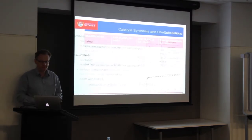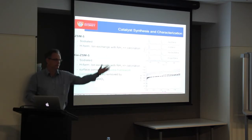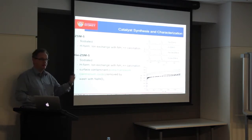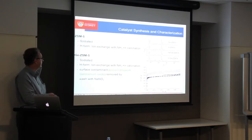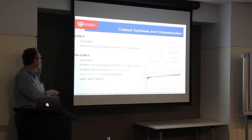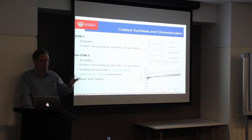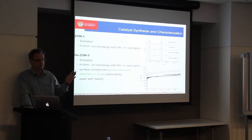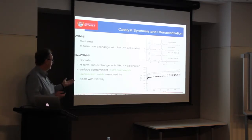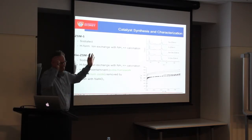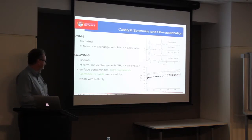So why don't we just make that? We made the ZSM-5 in a sodiated form, then ion-exchange to make the ammonia form, and then the protonated form. Here are all our XRDs — we make what we say we made. For the germanium ZSM-5, we do the same thing. But the germanium doesn't really want to go into the silica easily, so there's always a little bit sitting on the external surface. It has just been published anyway — that's impressive.